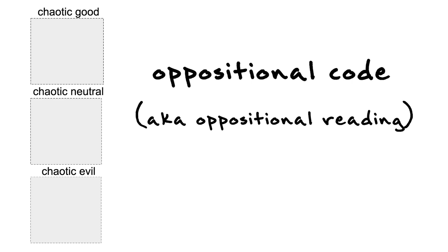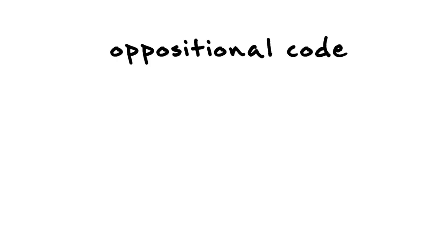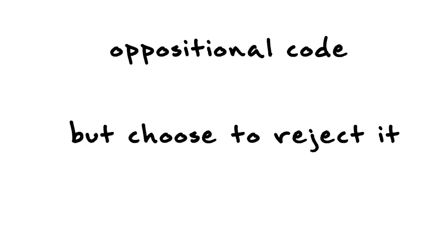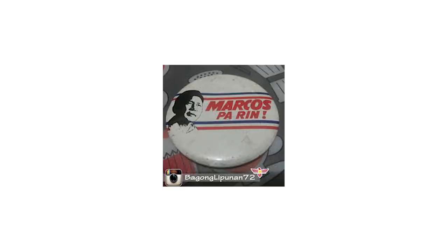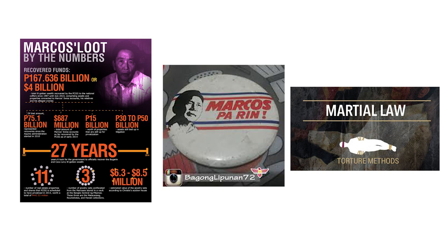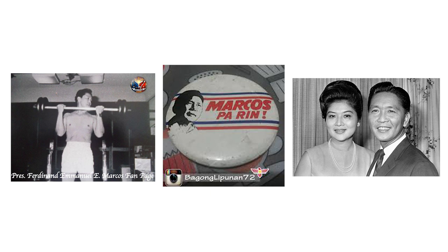The last code, oppositional code, is what I call the chaotic code. It throws everything out the window. Audiences using the oppositional code may understand the intended meaning, either fully or to a certain extent, but regardless they choose to reject it and decode the message in a globally contrary way or through an alternative frame. A good example would be the apologists of Ferdinand Marcos in the Philippines — even though they're presented with historical evidence and objective facts that Marcos was a dictator and human rights violator, they use an alternative frame that he was a hero who contributed a lot to the country.